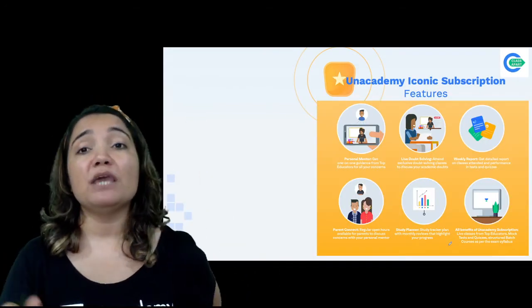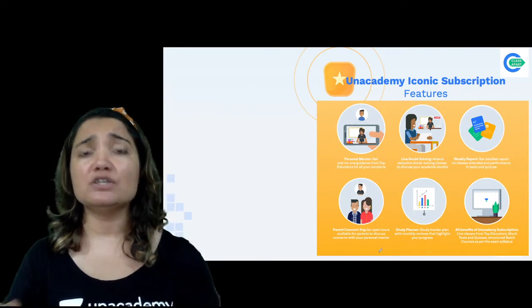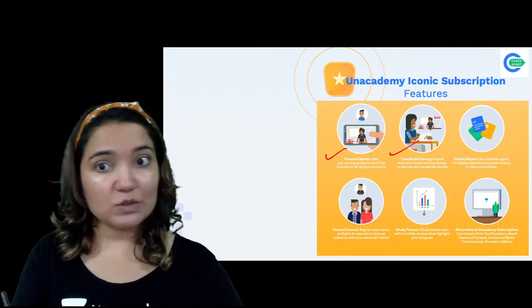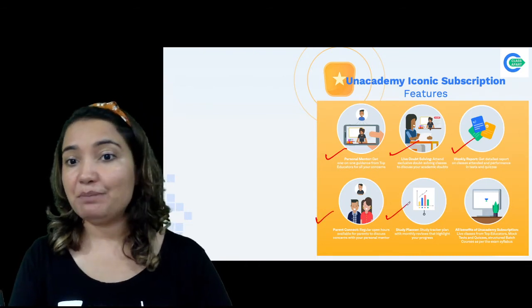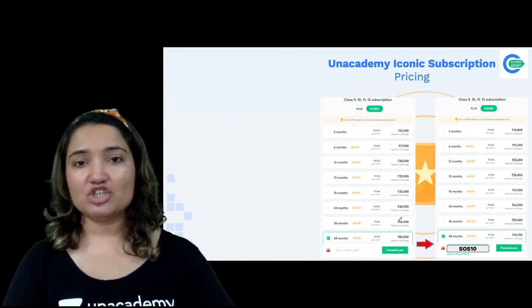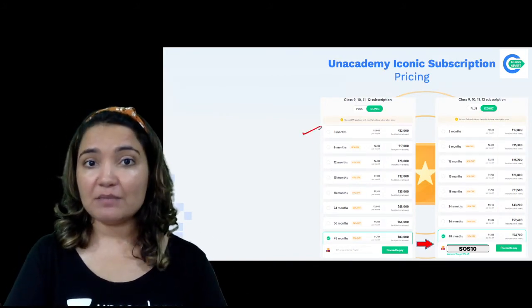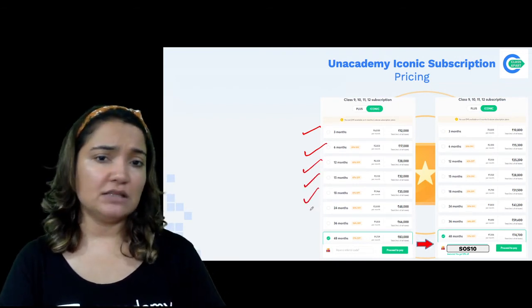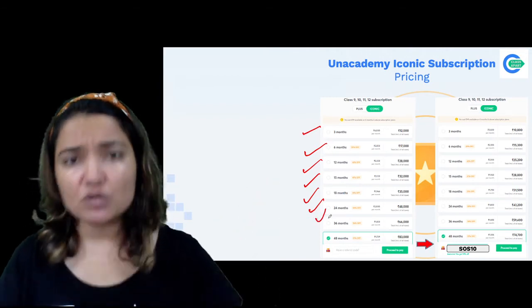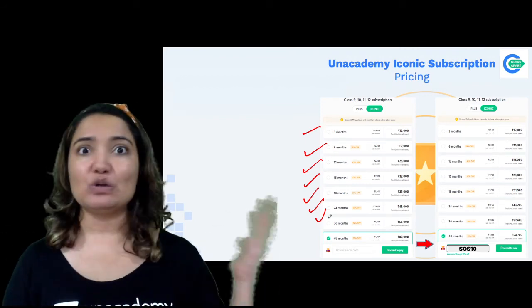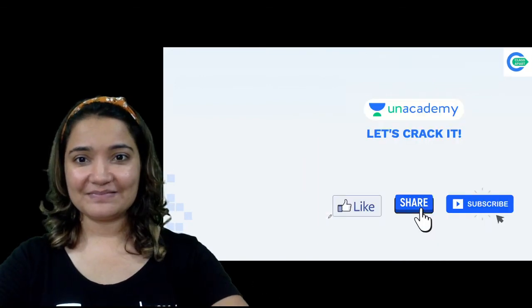The other option is the Iconic subscription. Its features include all Plus features, plus a personal mentor, live doubt solution sessions, weekly reports, parent connect, and a study planner. Iconic is way better than Plus. Pricing: 3 months — 12,000; 6 months — 17,000; 12 months — 28,000; 15 months — 32,000; 18 months — 35,000; 24 months — 48,000; 36 months — 66,000. Use my code SOS10 for 10% discount. You can also pay on a per-month, no-cost EMI basis — meaning no interest on your EMI. So go ahead and buy your subscription without any wait.